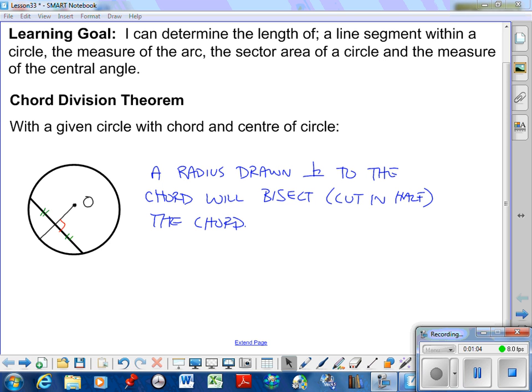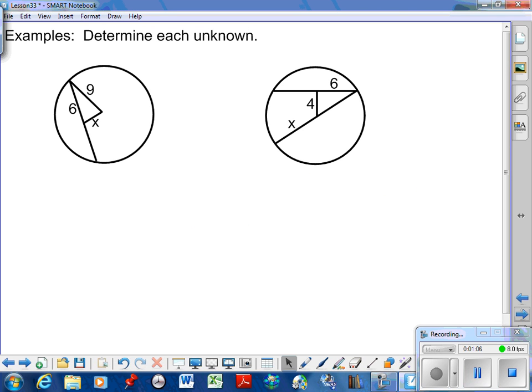The chord division theorem allows us to answer questions that look like this in the textbook. To determine each unknown, I want to know the value of x. On a test, I would tell you that's the center O right there, and this would be a right angle. What we have here is a triangle which is a right angle, and we know two sides. To find that third side, we're going to use Pythagorean theorem to solve for the unknown.